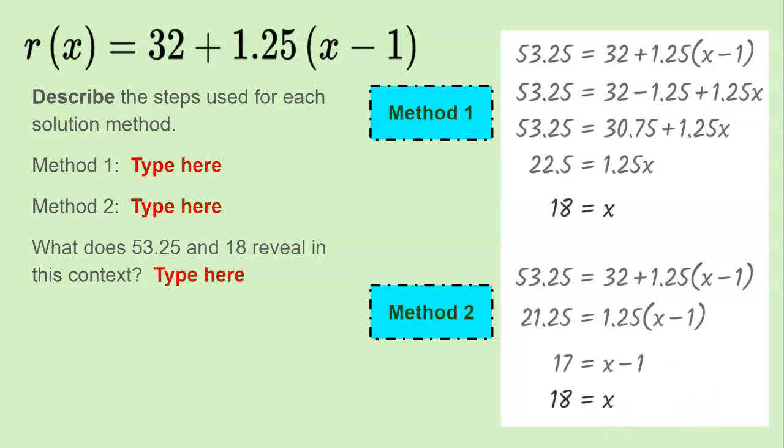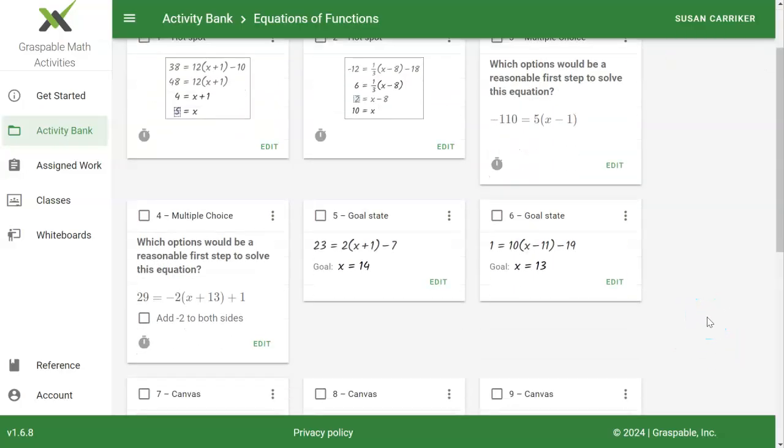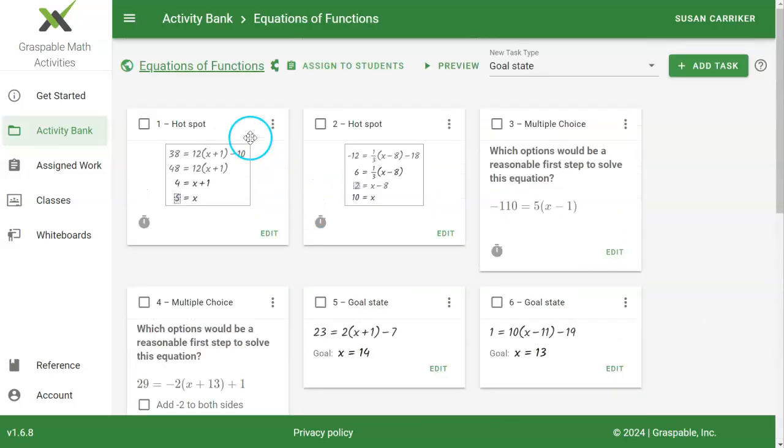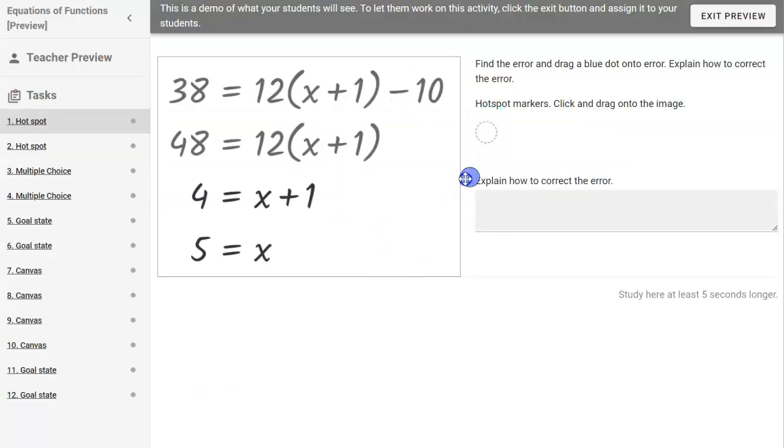The next thing we're going to do is a Graspable Math activity. This activity has a variety of tasks and there are exactly 12 different screens that they will go to. The first one is a hot spot. And if you've never done this, you take this blue dot and let's just say the error was right here. Which obviously that's not true. They would still have to type something in this blank to say what they did. So let's say first you would rewrite the equation. I'm just making something up here. And then you would click check.